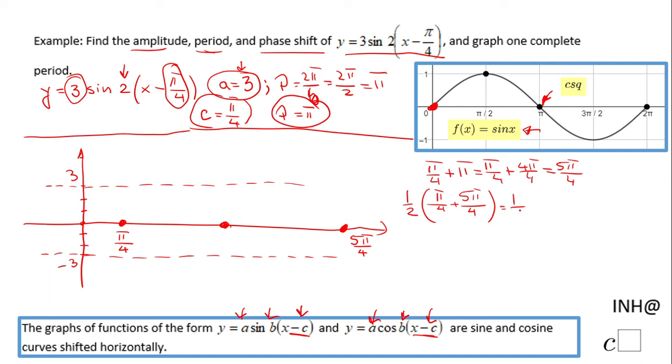π/4 plus 5π/4 is 6π/4. Simplifying, 2 goes into 6 three times, so we get 3π/2. This is the point 3π/2 right here. So we have the three intercepts that go with sine of x.